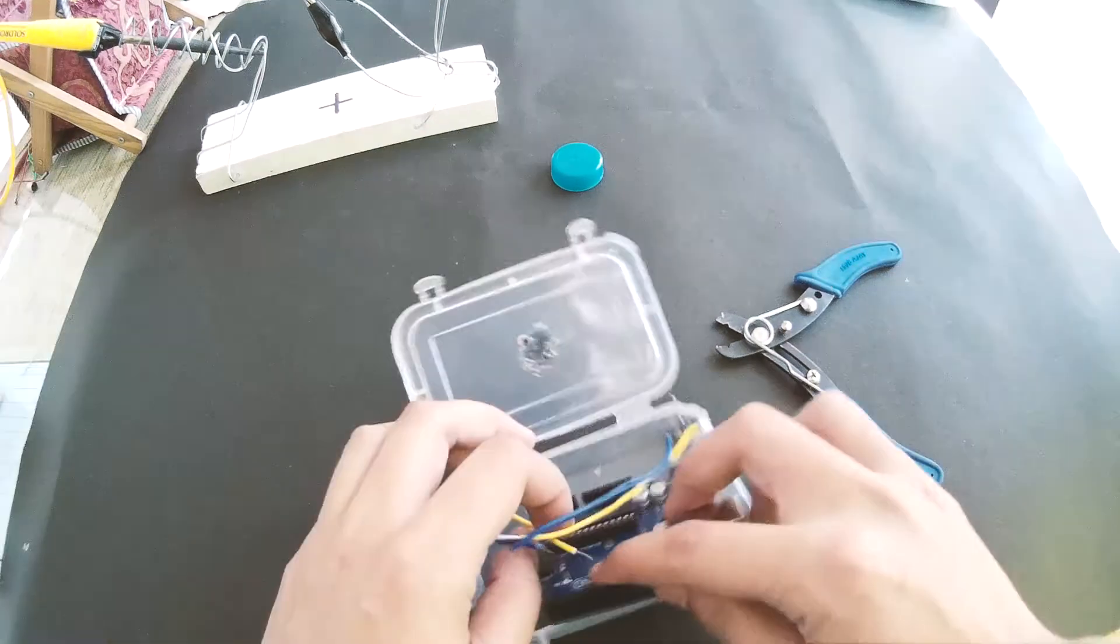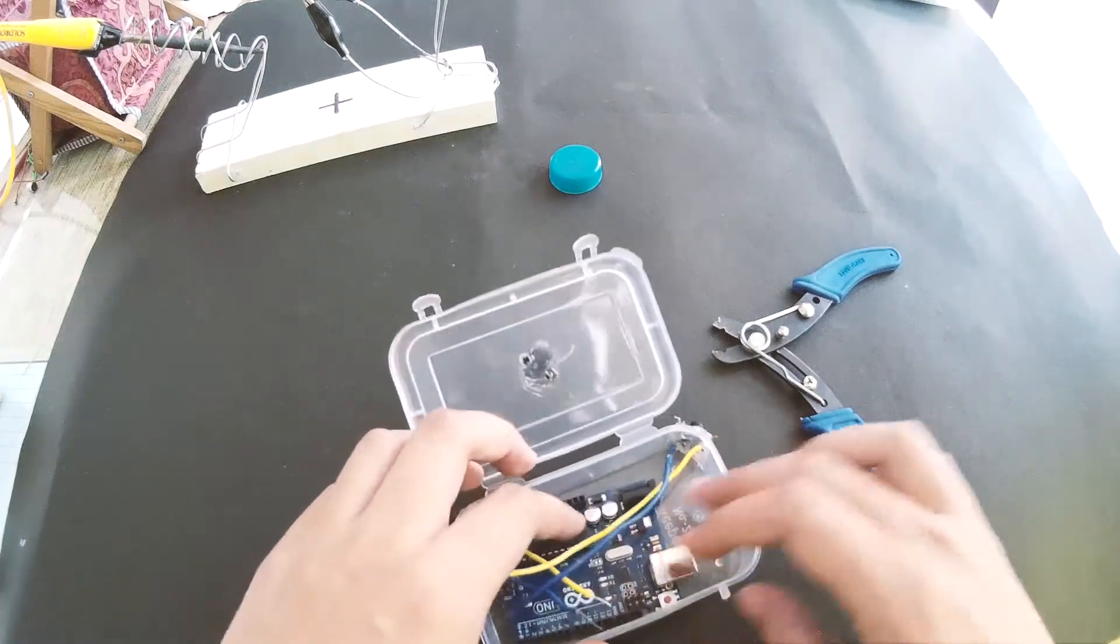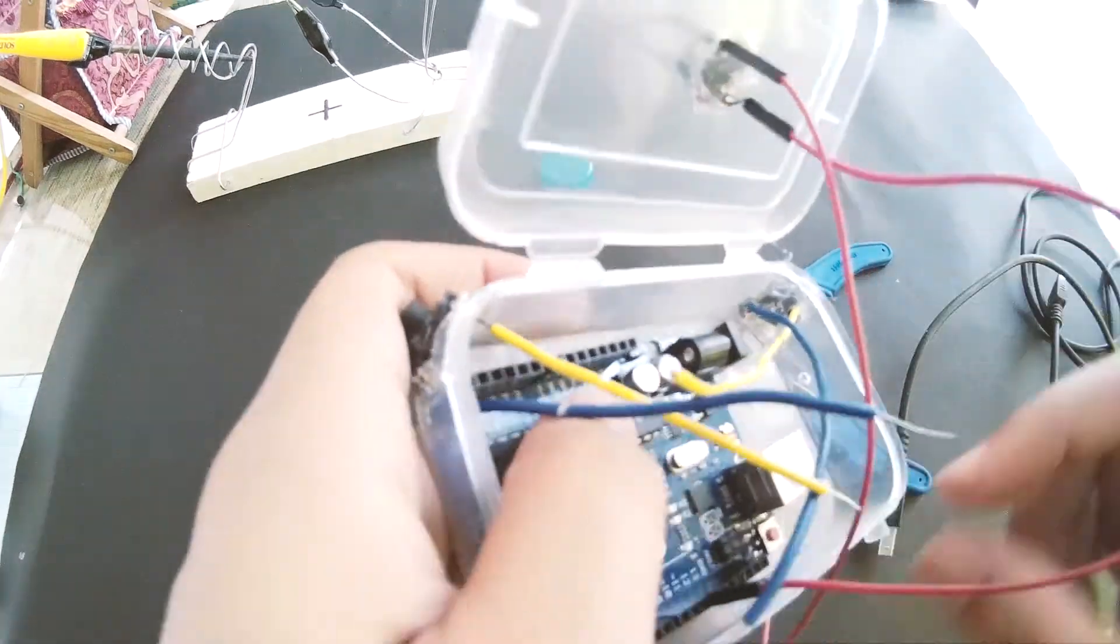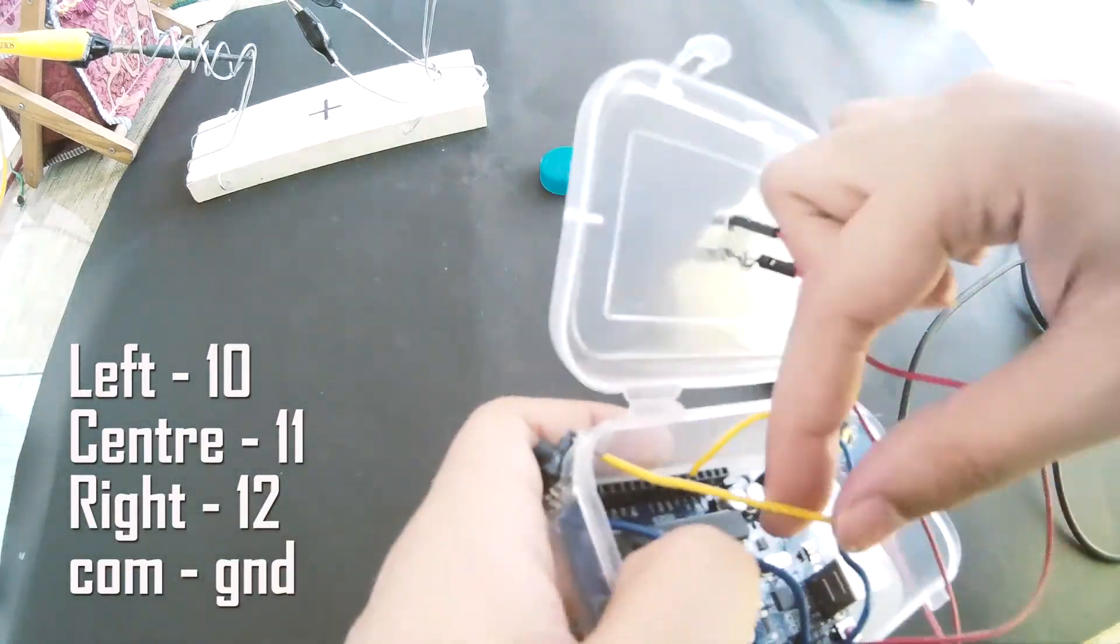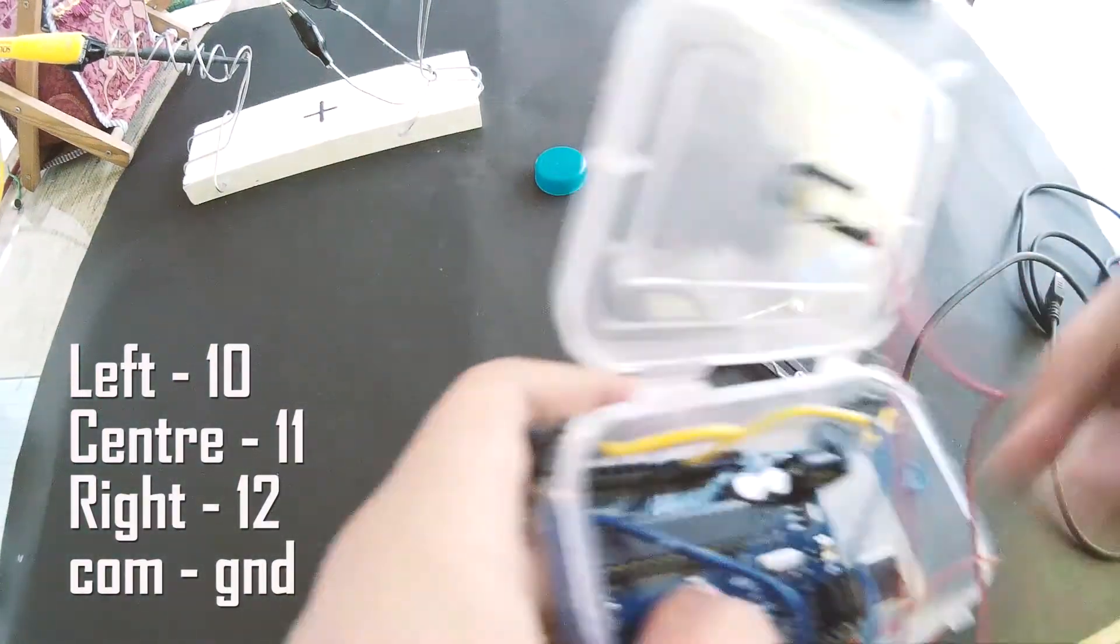Secure the buttons with hot glue. Put the Arduino in place and connect the left button to pin digital 10, center to pin digital 11, and right to pin digital 12, all through the ground.